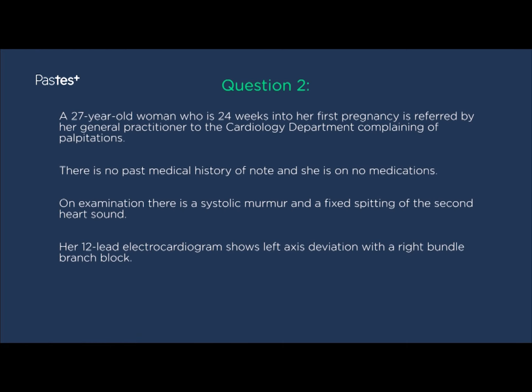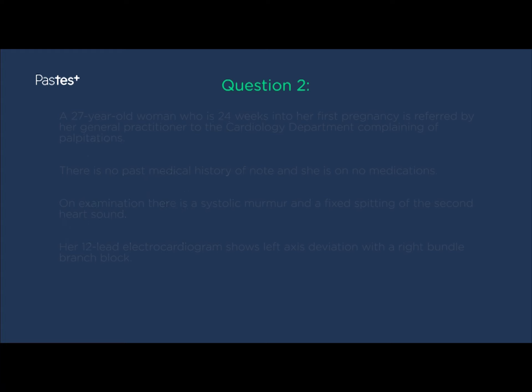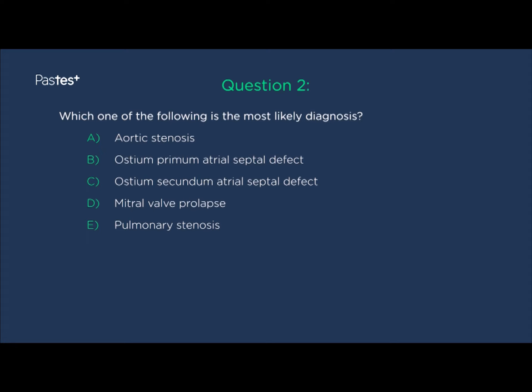We'll now look at question two. A 27-year-old woman who is 24 weeks into her first pregnancy is referred by her GP to the cardiology department complaining of palpitations. There is no past medical history of note and she is on no medications. On examination, there is a systolic murmur and a fixed splitting of the second heart sound. Her 12-lead electrocardiogram shows left axis deviation with a right bundle branch block. If you went for B, ostium primum atrial septal defect, you are correct.